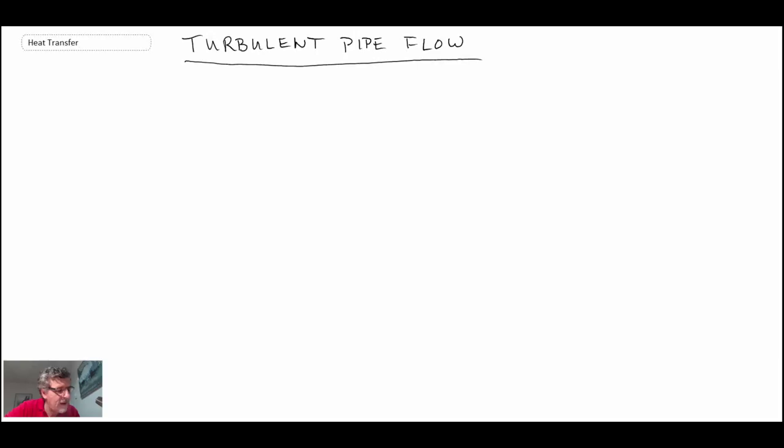For turbulent either flat plate or in this case pipe flow it's very very difficult and so what we need to do is rely on empirical data. We're going to use the Colburn analogy which is something that we saw for the boundary layer flow. The Colburn analogy relates convective heat transfer coefficient to skin friction measurements and that was for the case of a flat plate.